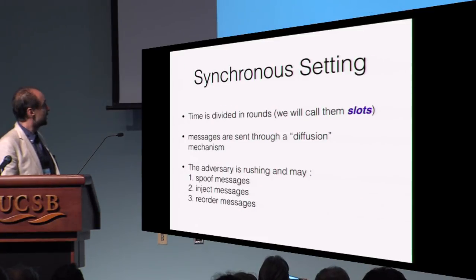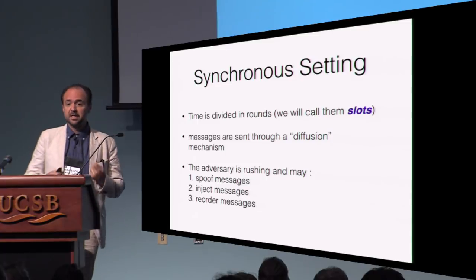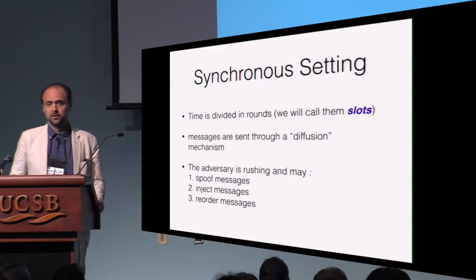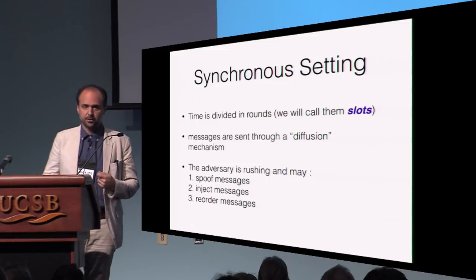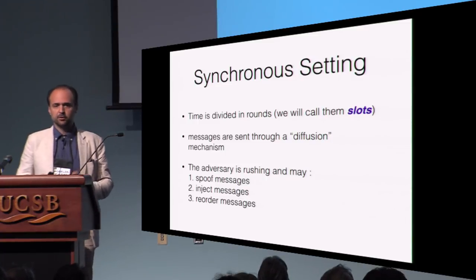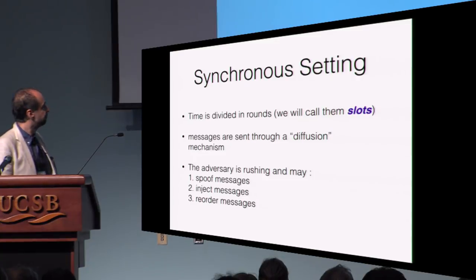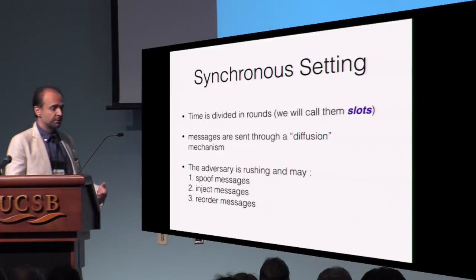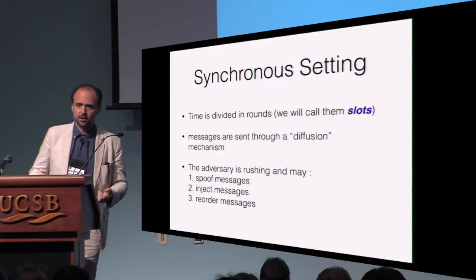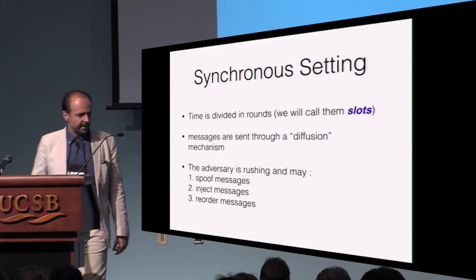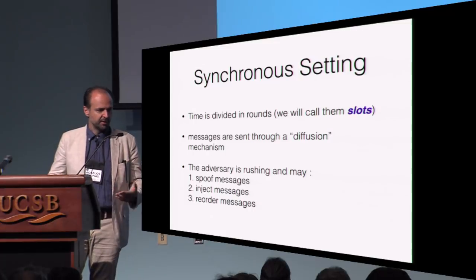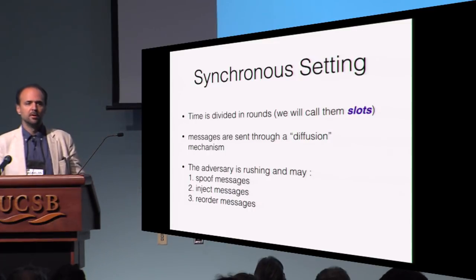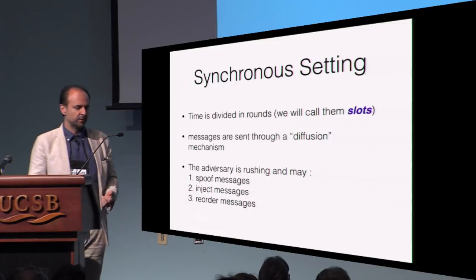The question is: is it possible to realize the ledger objective using just a proof-of-stake discipline? We are in a synchronous setting, time is divided into rounds called slots, and messages are sent through a diffusion mechanism — the same model seen in previous talks. The adversary is rushing, meaning it can deliver messages, spoof their source, inject its own messages, reorder messages, and selectively send or withhold messages to different parties.